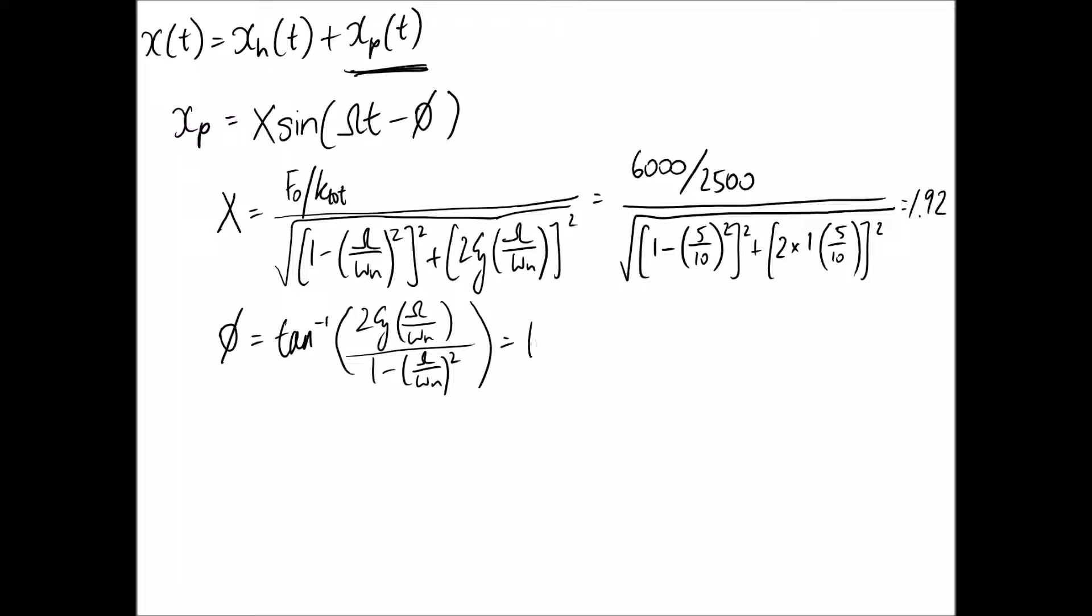So doing the same thing now for phi. This comes out to be 0.927 for the angle, or the phase shift I should say, in radians. So writing it out, we now know that our particular solution is equal to 1.92 sin of 5t minus 0.927.